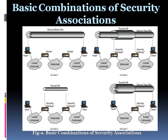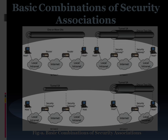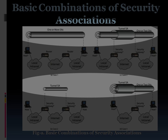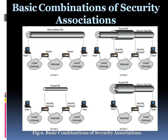Next are the basic combinations of Security Associations. The IPSec architecture document lists four examples of combinations of SAs that must be supported by compliant IPSec hosts — such as workstations, servers, or security gateways like firewalls or routers. These are illustrated in a figure where the lower part of each case represents physical connectivity of the elements and the upper part represents logical connectivity via one or more nested SAs. Each SA can be either AH or ESP; for host-to-host SAs the mode may be either transport or tunnel, otherwise it must explicitly be tunnel mode only.